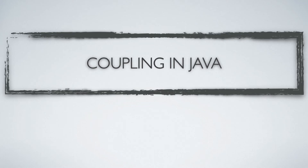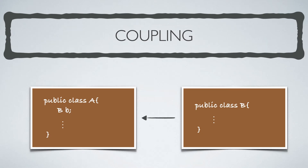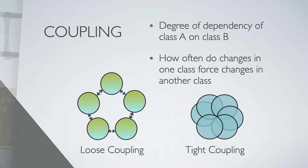In this tutorial, we will learn what's meant by coupling in object-oriented design. Take a scenario where you have two classes, class A and class B, where class A uses class B — there is a member in class A which is an object of class B. The degree of dependency of class A on class B is called coupling. That is, when you make some changes in class B, how often you have to make corresponding changes in class A too. In simple terms, coupling is the degree of dependency of one class on another.